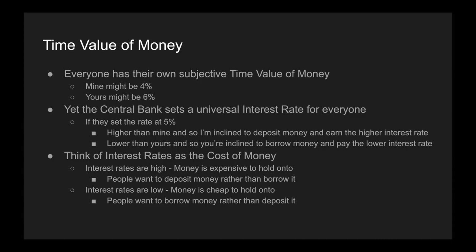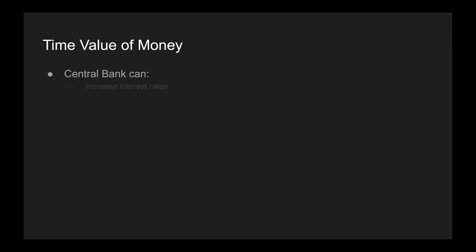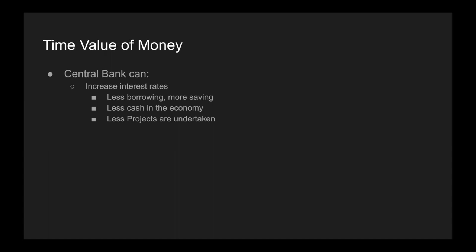It's very important to understand that the time value of money is subjective, but there's a universal rate for everyone set by the central bank. The central bank can increase interest rates, which results in less borrowing and more saving. This means there's going to be less cash in the economy — money has been sucked out of the system. Also, less projects are undertaken because people fund projects with debt, and when interest rates are high, it becomes less beneficial due to the higher repayment amount. Less spending on goods and services happens as more people put their surplus cash into the bank.